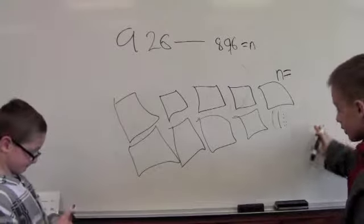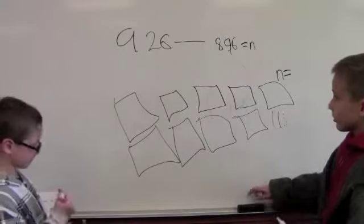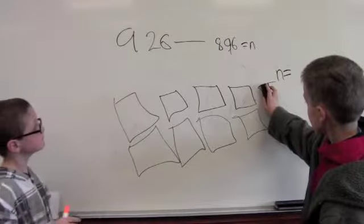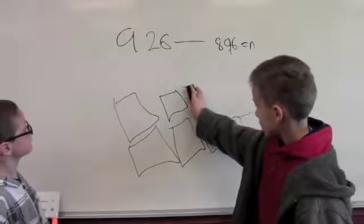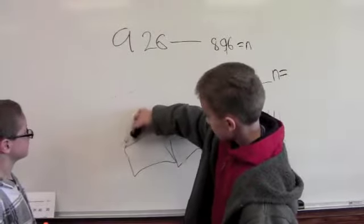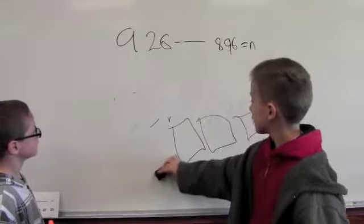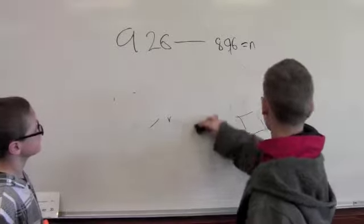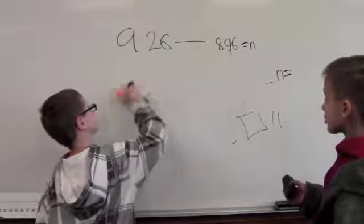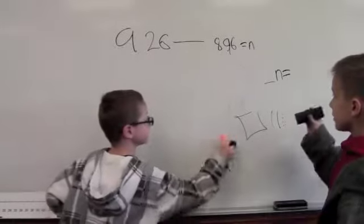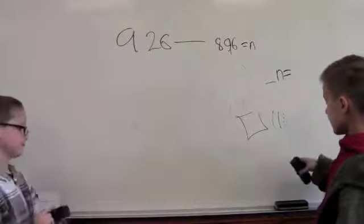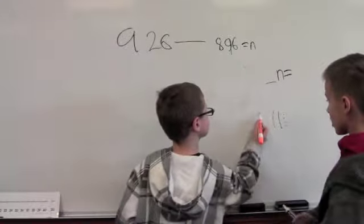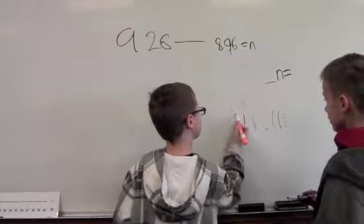Now we erase 8 hundredths. And now we are trying to get rid of 90, so we have to erase the 100 block and then draw 10 little sticks.